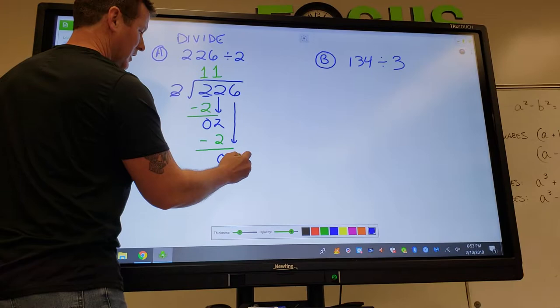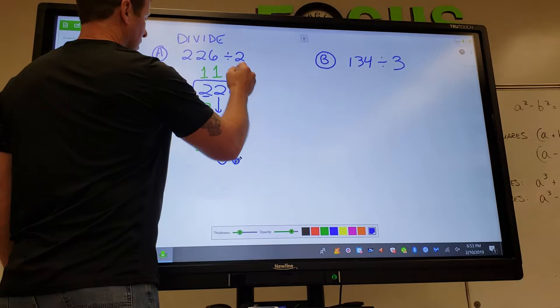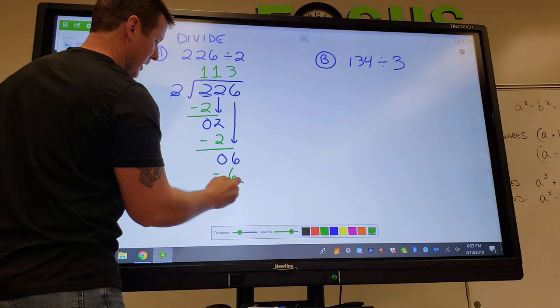And then again, keep bringing down the numbers one at a time and then ask yourself how many times does 2 go into 6? 3 times! And then you multiply 3 times 2 and subtract that and voila, no remainder.